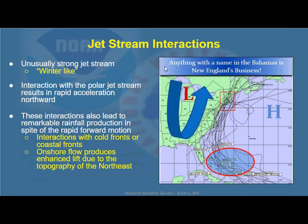Let's talk about the jet stream interactions. It happens when you have an unusually strong jet stream, almost winter-like. This time of year in the summer the jet stream tends to be weaker, with the strongest winds shifted well to the north in Canada. It's more in the wintertime when we have greater temperature contrast. It's the interaction with this polar jet stream that results in the rapid northward acceleration of the storm, drawing it northward and leading to remarkable rainfall production even as the storms move at 20 to 30 miles per hour or even greater. There's usually an interaction with a cold front or a coastal front.